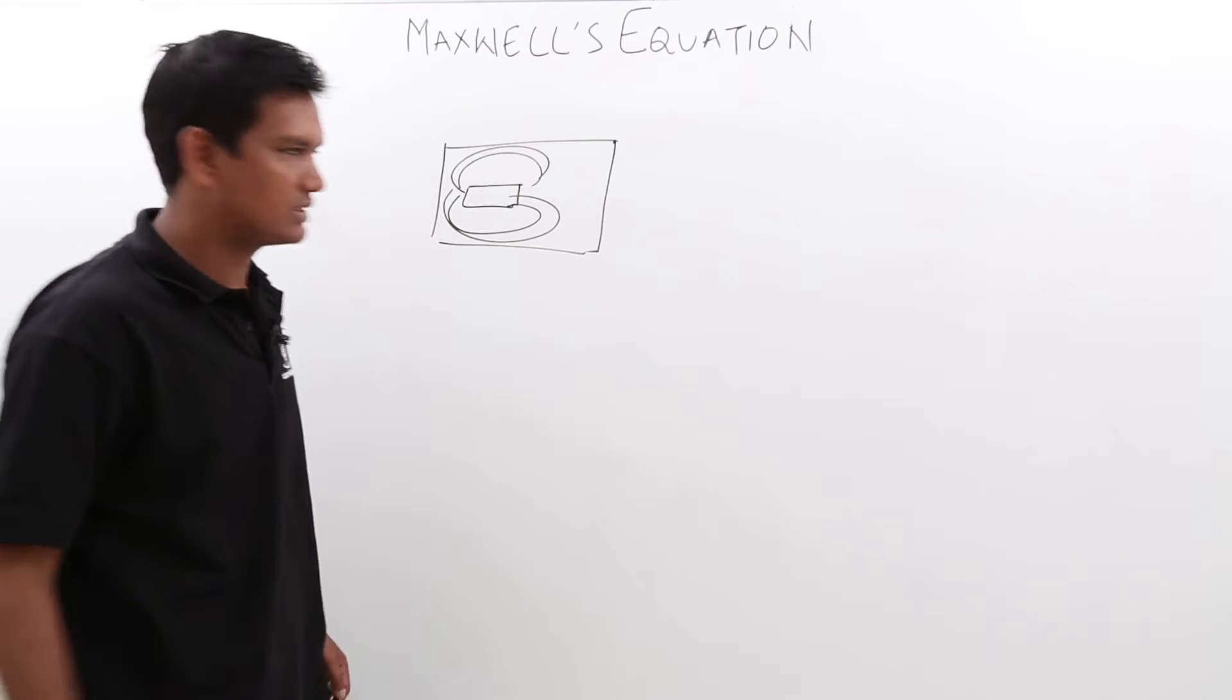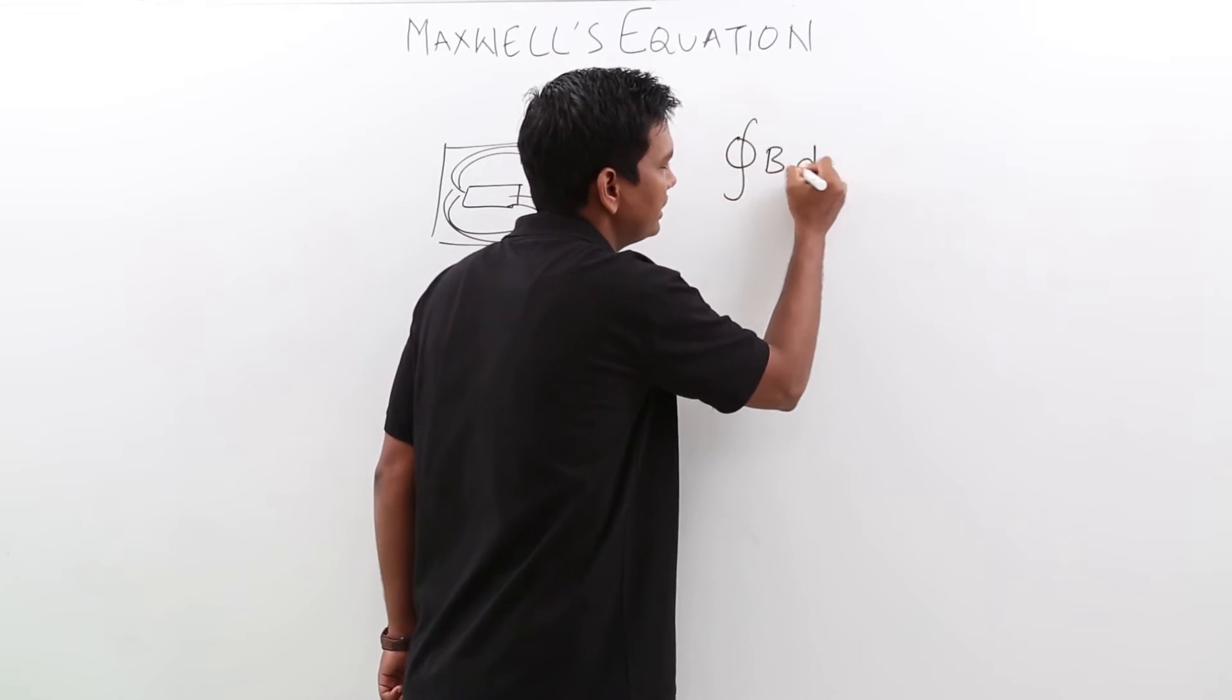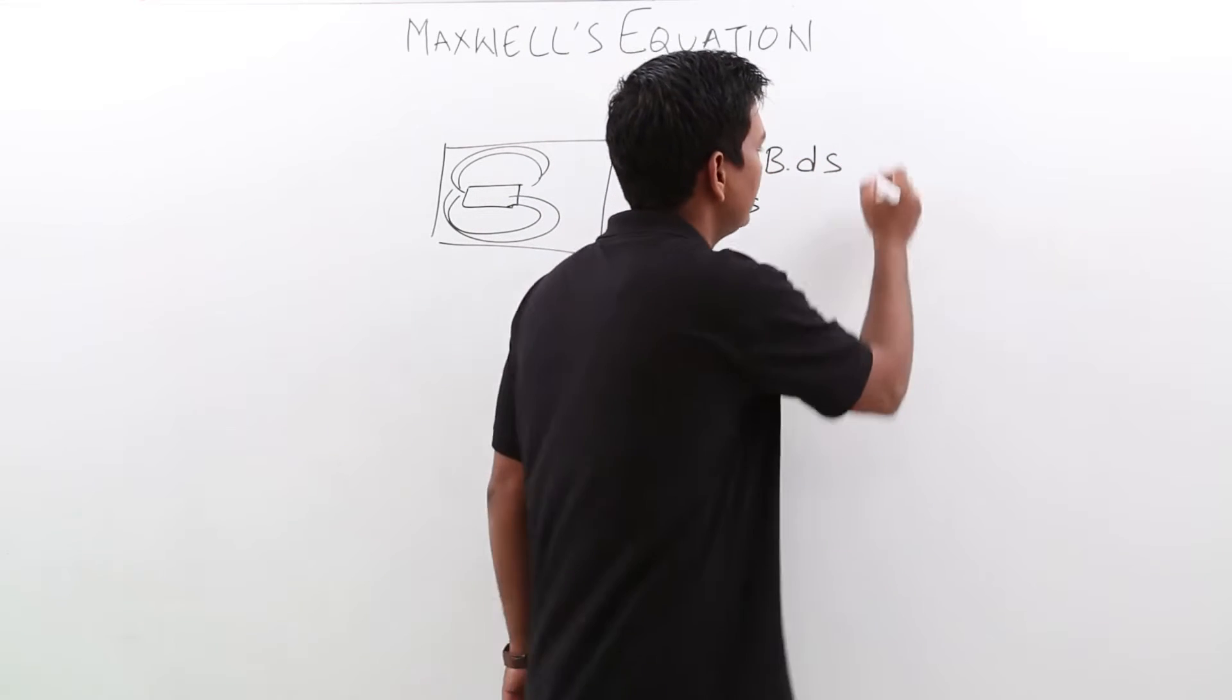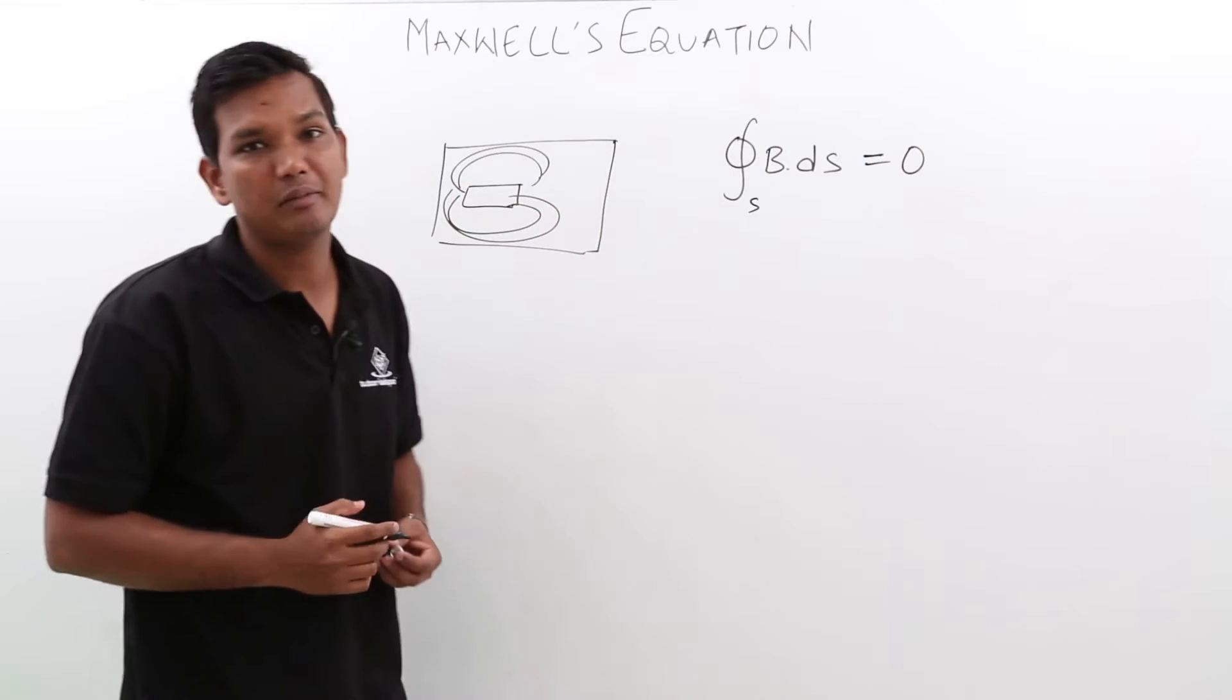What the second Maxwell equation says is ∮B·ds over the closed surface is equal to 0. This is what is called the integral form of the second Maxwell equation.